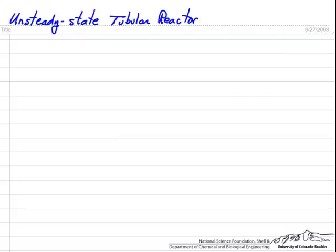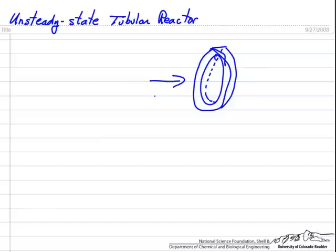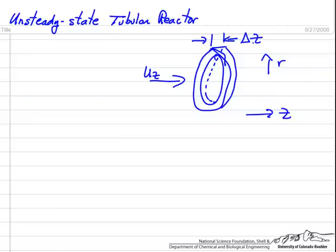We're going to do a balance on a differential volume, but it has to be an annular region. If I am looking at an angle, the flow would be in this direction. We're going to work in terms of velocity instead of volumetric flow rate because we're allowing for radial gradients. The r is the radial direction, z is the axial direction, and this annular volume has a thickness delta z and a radial distance delta r.